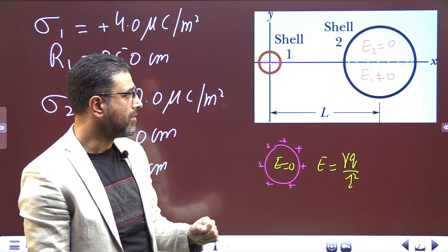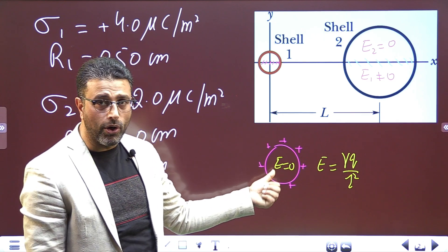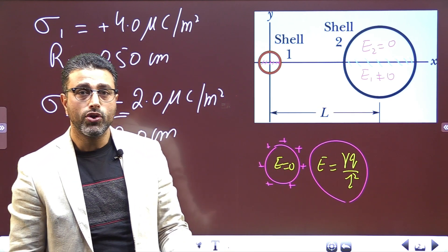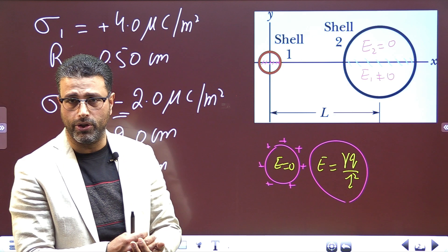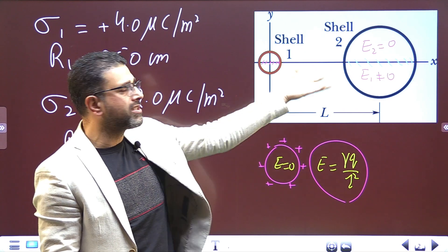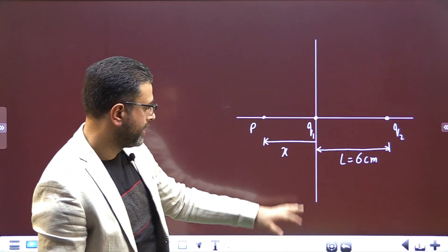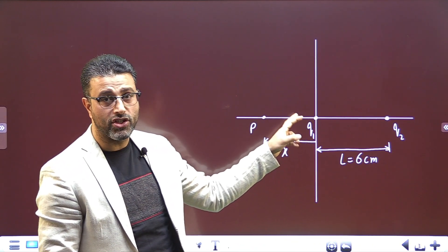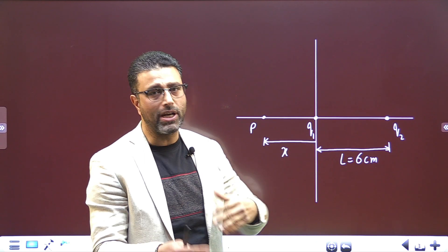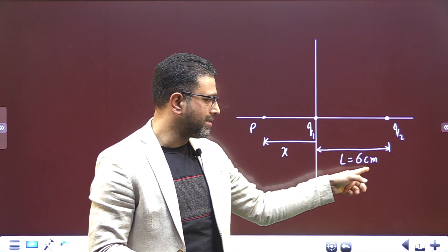We have to look for points lying outside both shells. For points outside a shell, it behaves like a point charge located at its center. Since our point of concern lies outside both shells, we can treat both as point charges — Q1 for shell one and Q2 for shell two. The distance between them is 6 centimeters.